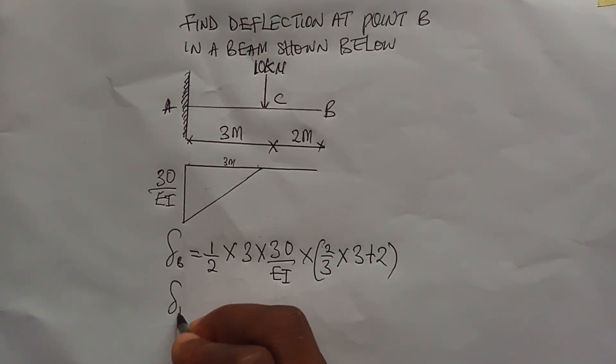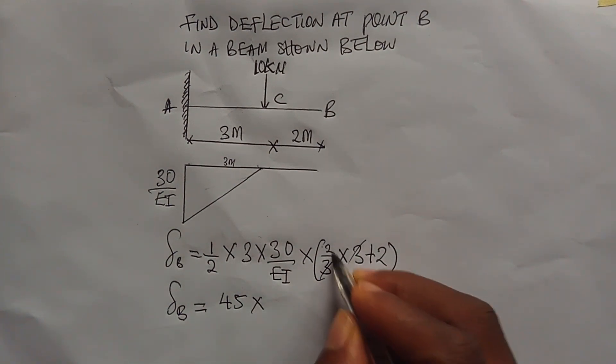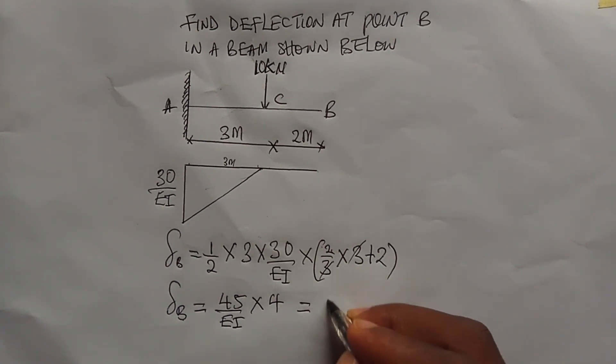If you solve this out, you are going to land at 45. This three will cancel this three. So you have 4 all over EI. This will give you 180 all over EI.